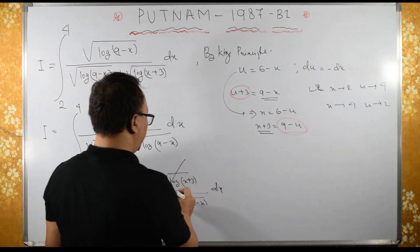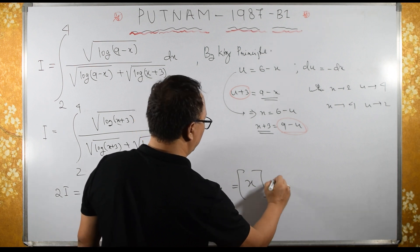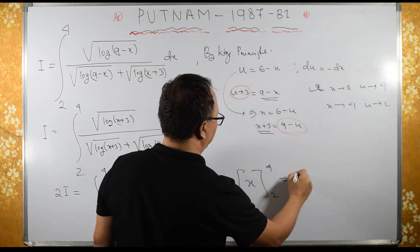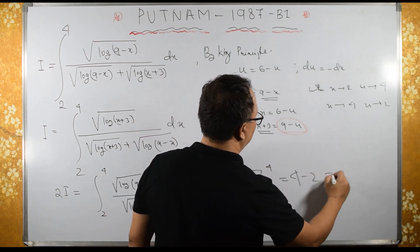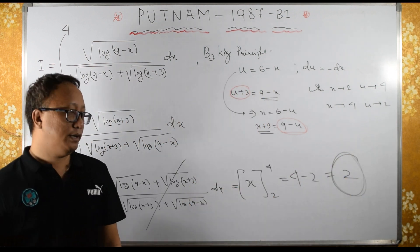This is sum of log of x plus 3 plus log of 9 minus x into dx. So these two get cancelled. The integral is x. And the limit is 2 to 4, upper limit minus lower limit is 2. So this is the required answer.